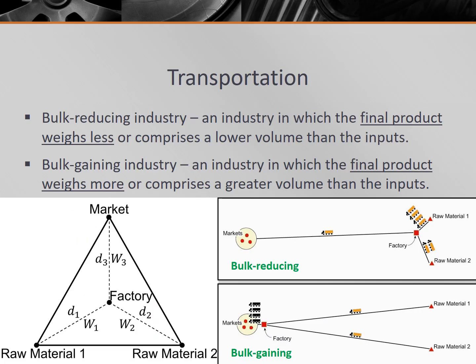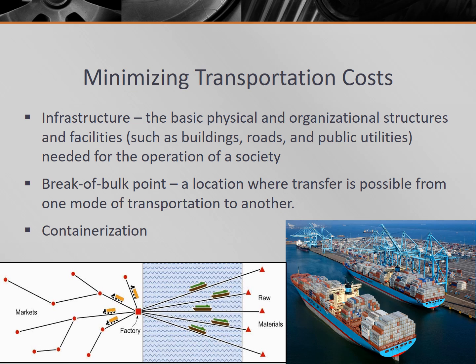Just remember that the name of the least cost theory tells you what you need to know. If you're a factory owner, where will you place your factory? It is the place where you generate the greatest profit by minimizing expenses or paying the least costs. When Weber was writing, transportation costs accounted for upwards of 50% of the total cost of a good. Today, transportation costs account for less than 5% of the cost of a good, so we need to discuss reasons for that decline.